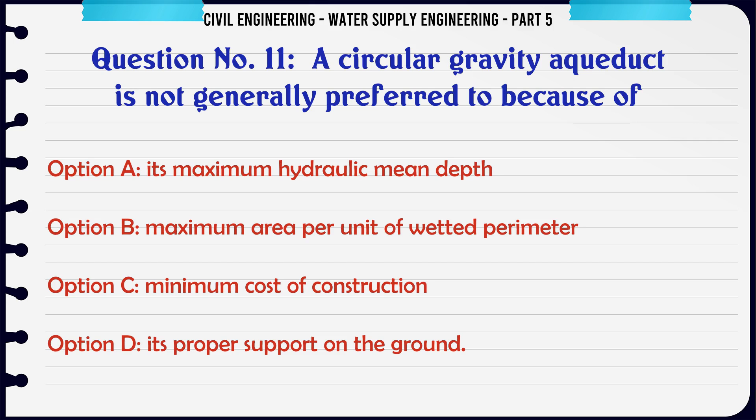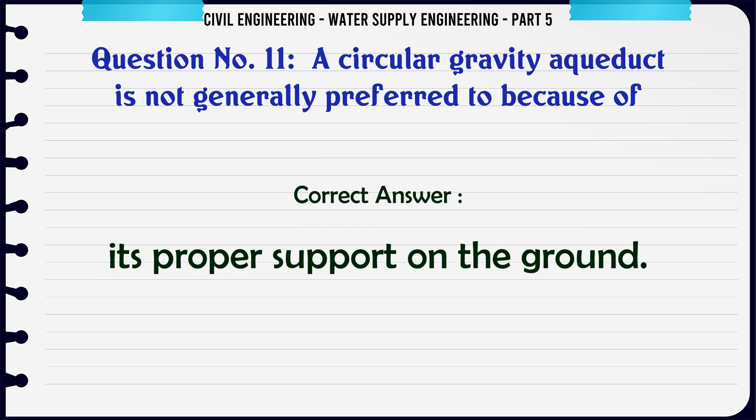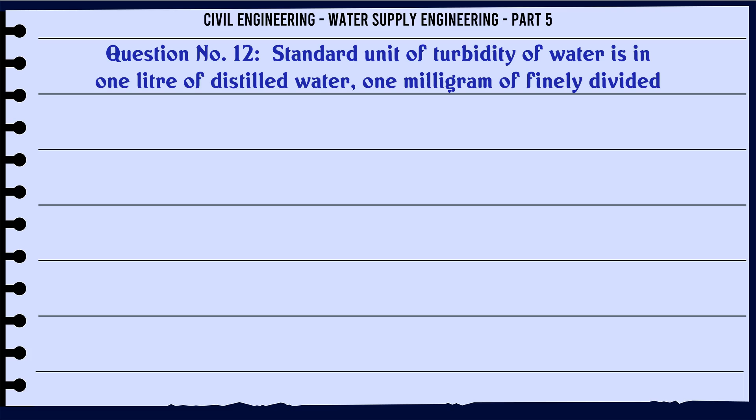A circular gravity aqueduct is not generally preferred because of: A. Its maximum hydraulic mean depth, B. Maximum area per unit of wetted perimeter, C. Minimum cost of construction, D. Its proper support on the ground. The correct answer is: Its proper support on the ground.